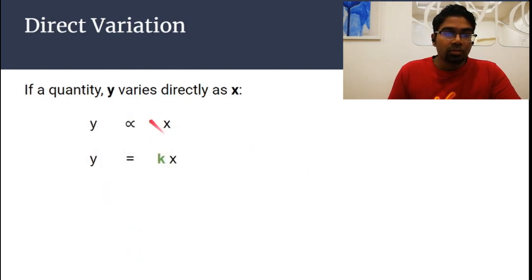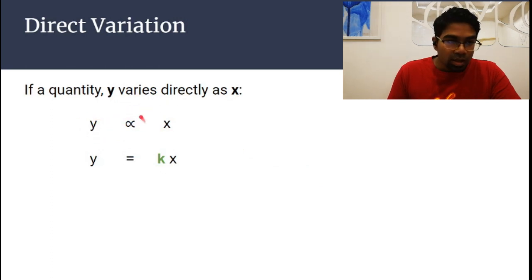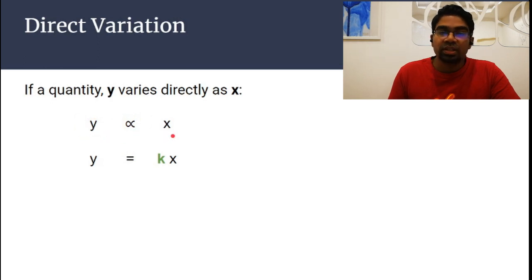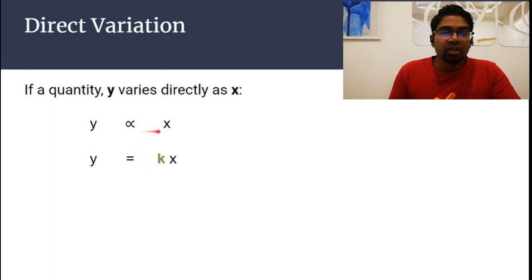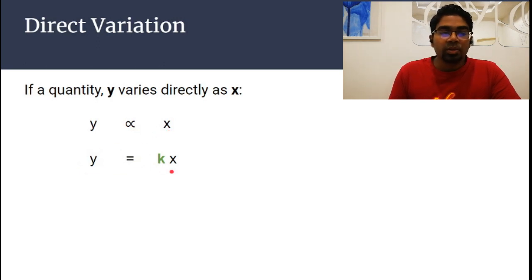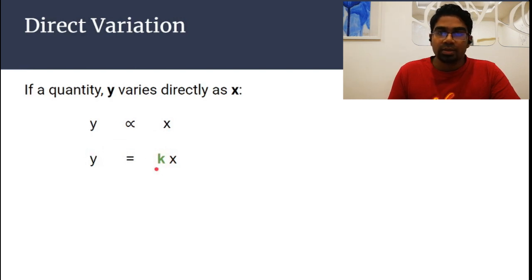When y varies directly as x, we write y is proportional to x. When we convert this into an equation, y is not equal to x — we need to add the proportionality constant, or variation constant, k. So it becomes y equals kx.